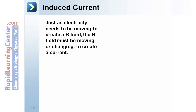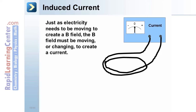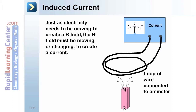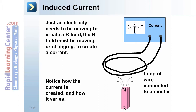Induced current. Just as electricity needs to be moving to create a magnetic field, the magnetic field must be moving, or changing, to create a current. Notice this setup where a coil of wire is attached to a meter to measure current. Here's a magnet producing a magnetic field. Notice how the current is created and how it varies.